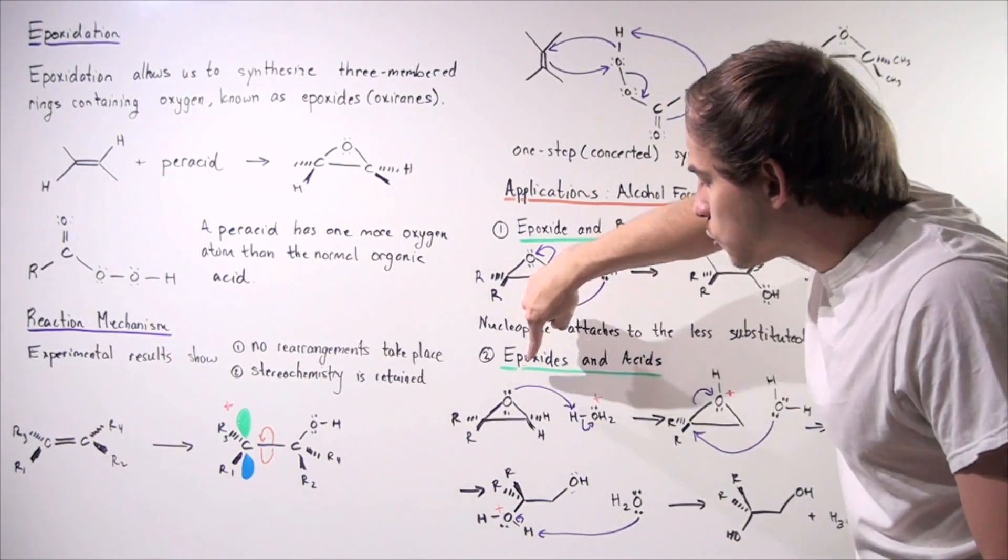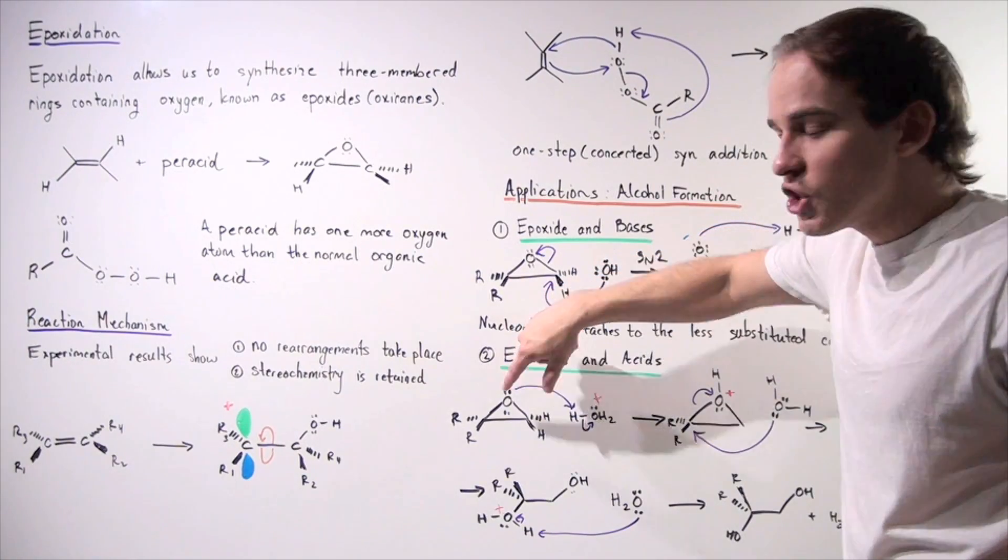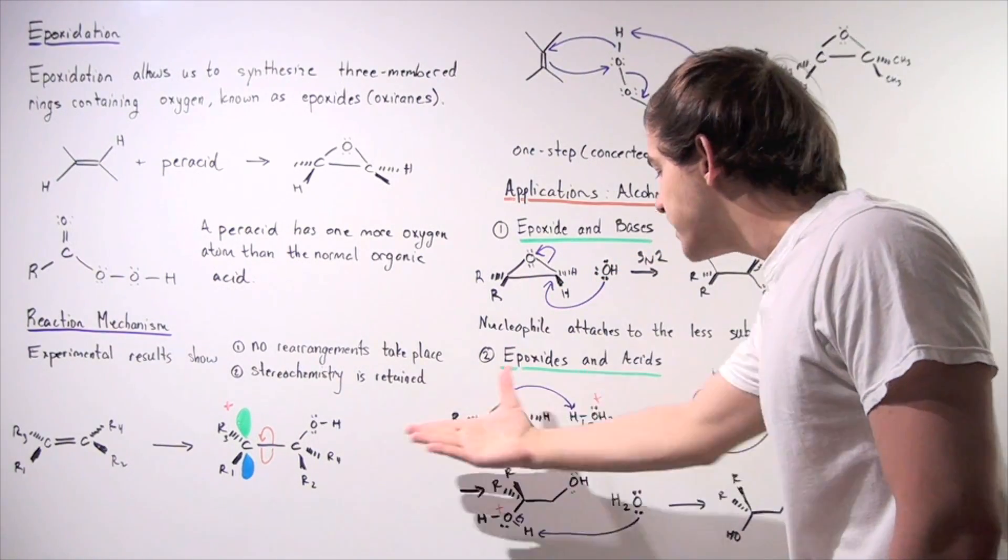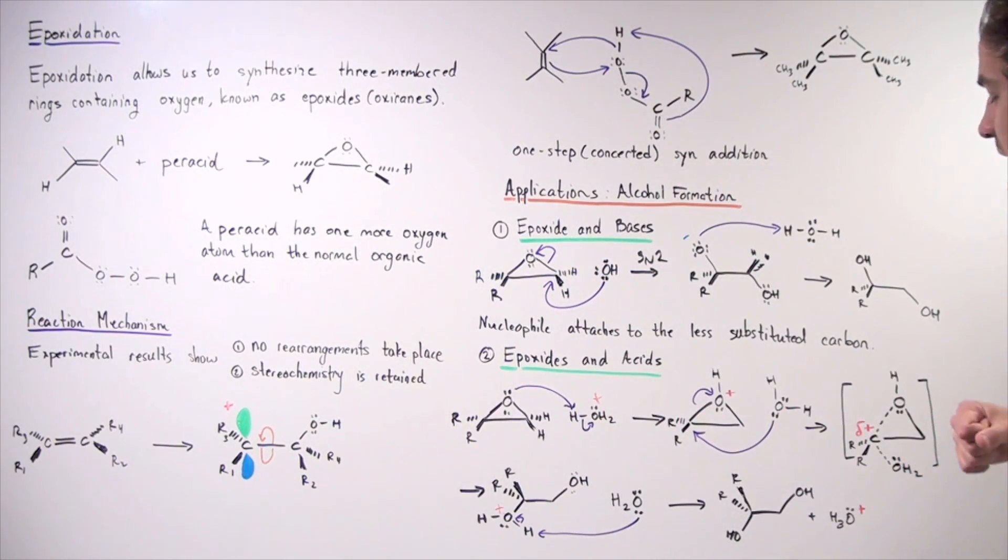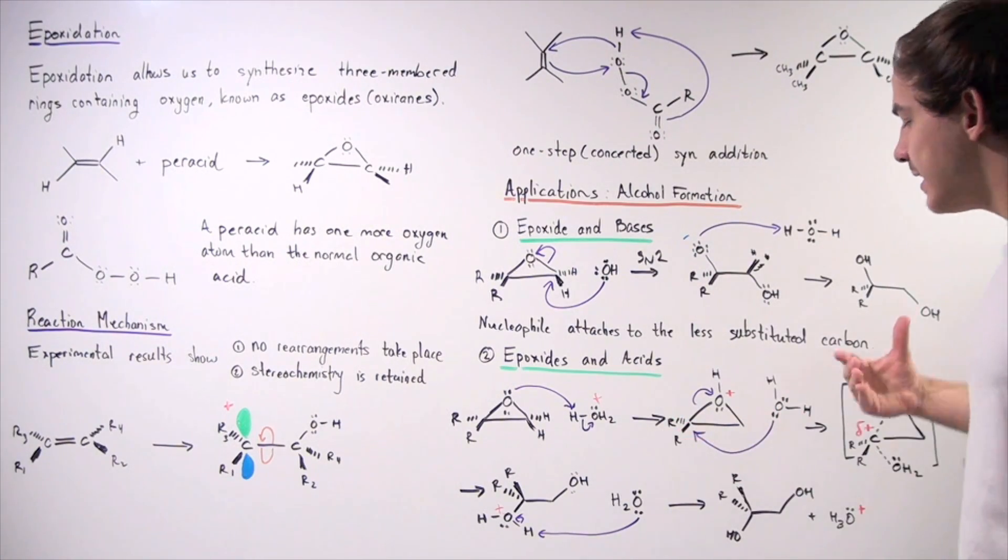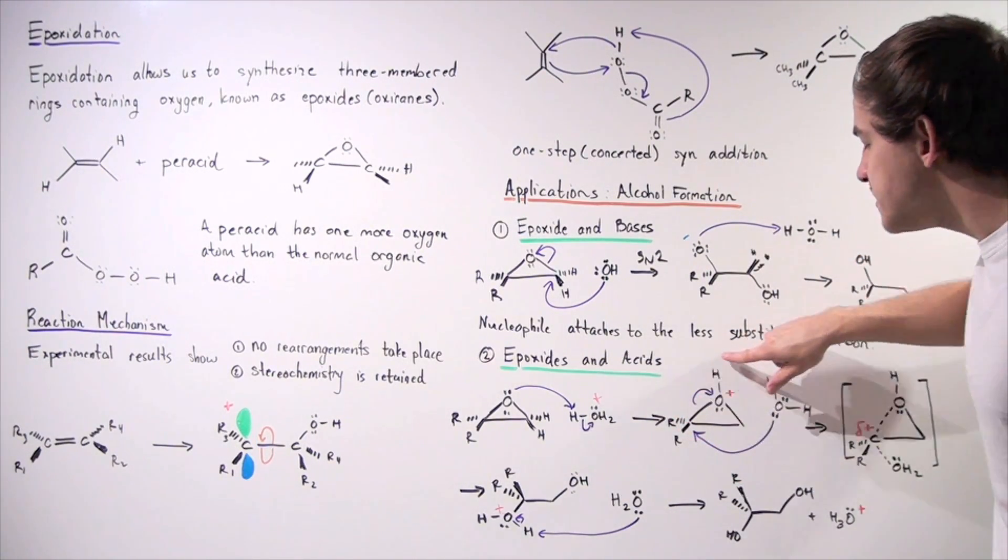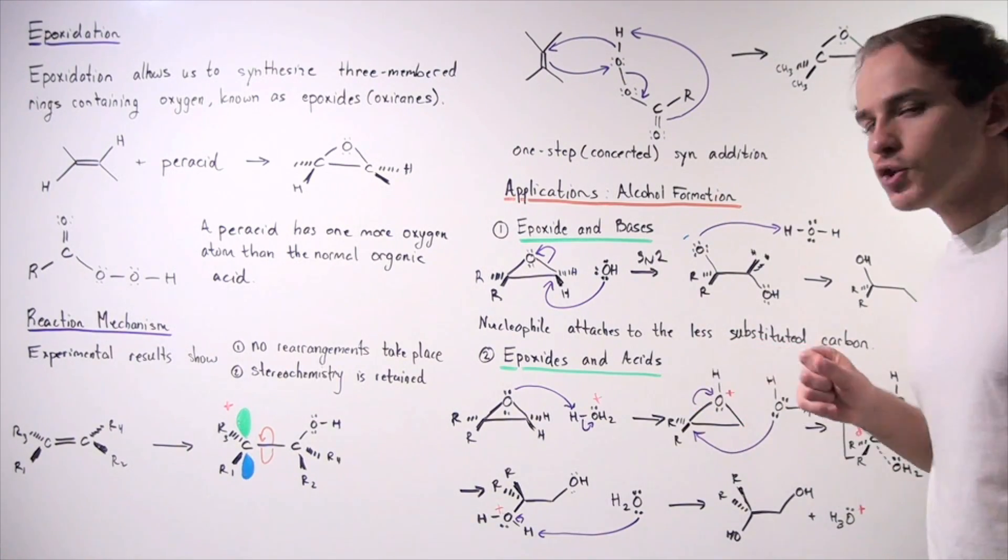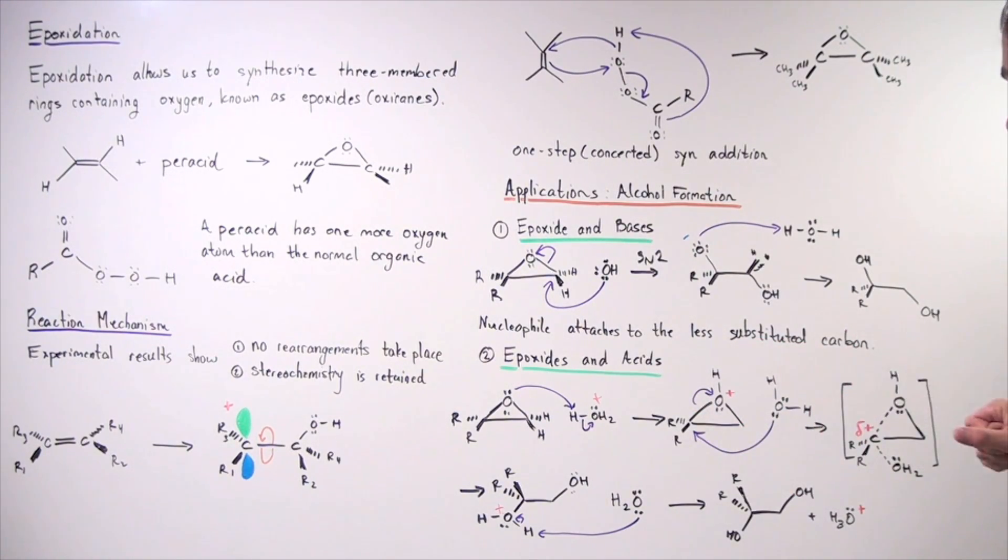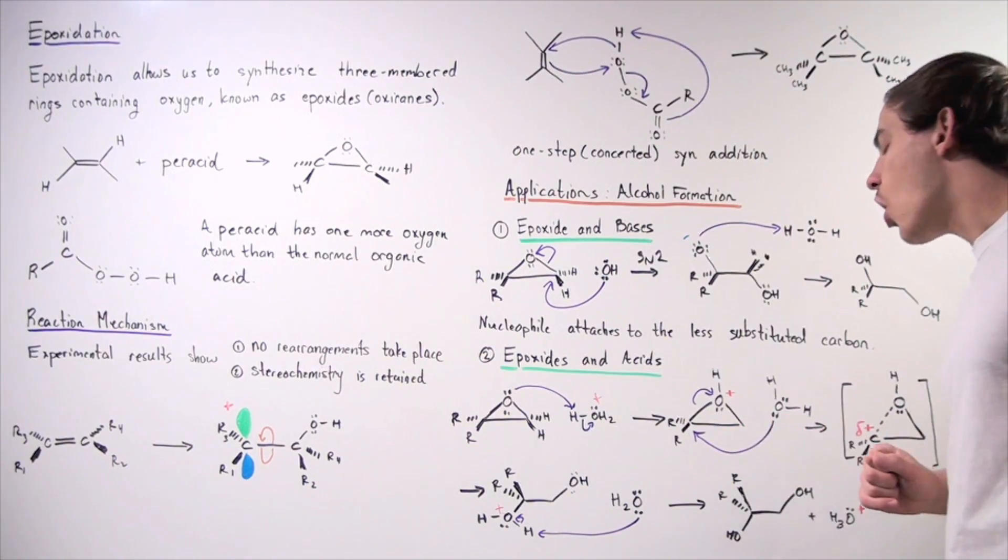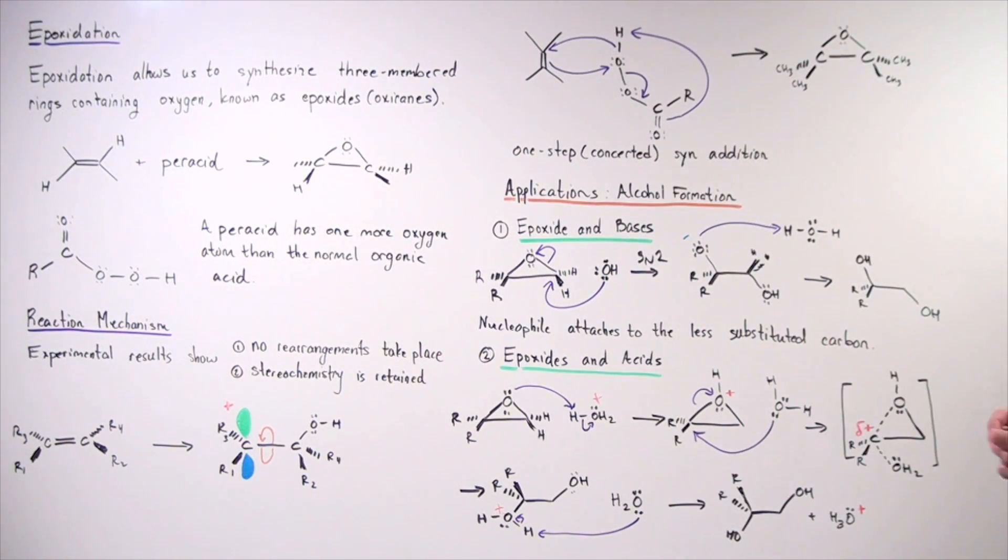So before the water can act as a nucleophile, the hydronium must protonate this oxygen. In the first step, we have the protonation step taking place. And now our intermediate has a positive charge on the oxygen, and now this becomes a much better leaving group.